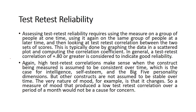But other constructs are not assumed to be stable over time. The very nature of mood, for example, is that it changes. A measure of mood that produced a low test-retest correlation over a period of a month would not be a cause for concern. Today you may not be in a good mood when filling the questionnaire, but after 15 days or one week, you may be in a very good mood. Whatever responses are recorded are correct responses. That is why test-retest reliability is very important.